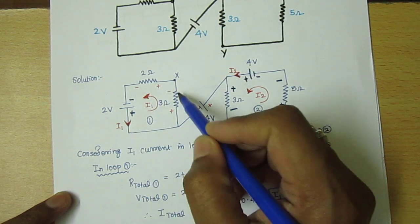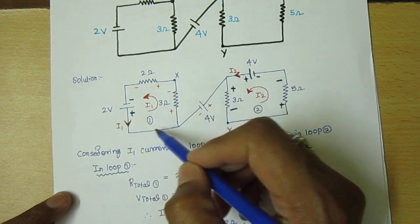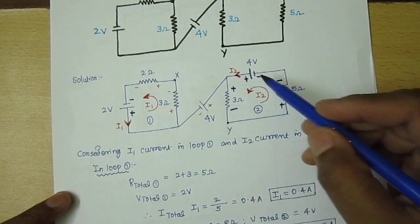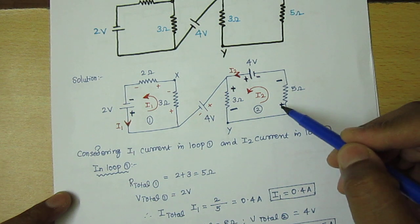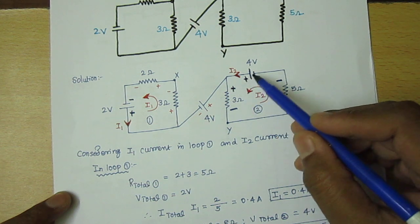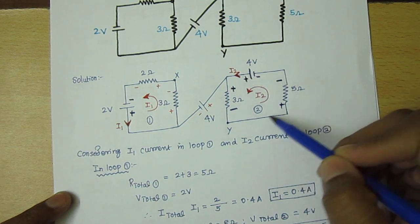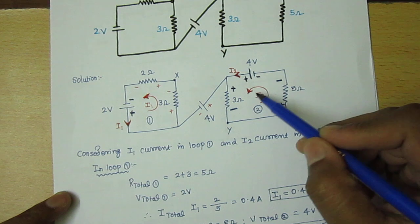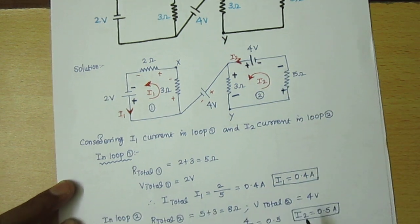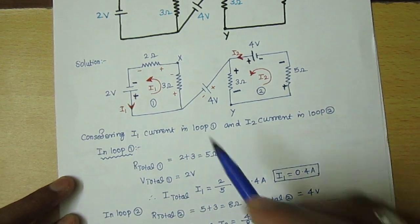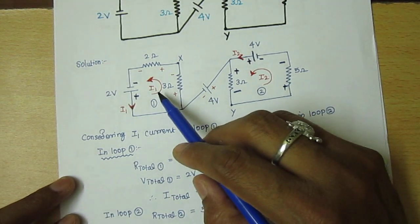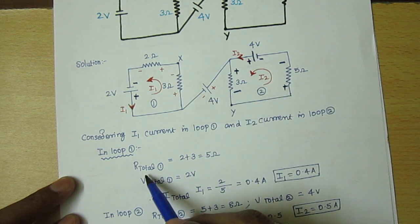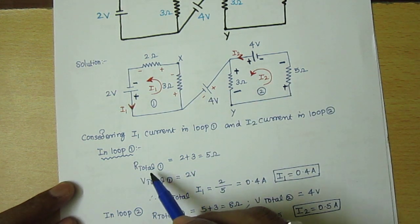The current I1 will flow common to the circuit. Here also it is positive, negative, positive, negative — like this it is connected, and the current flowing in loop 2 is I2. To find the current I1 in loop 1, first we have to calculate the total resistance R_total.